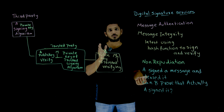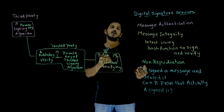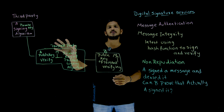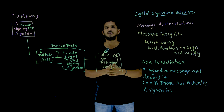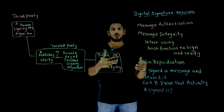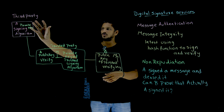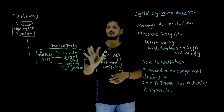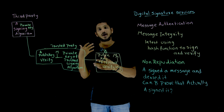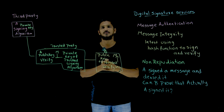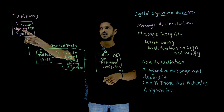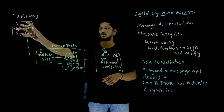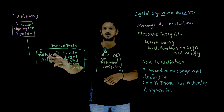So Non-Repudiation cannot be provided directly, but there is one way to provide it — by using a trusted third party. How can we do that? In order to send messages between A and B, there must be a trusted third party; it may be a bank or anything similar. A is going to use his private key, sign the message, and send the message and signature to the trusted third party.